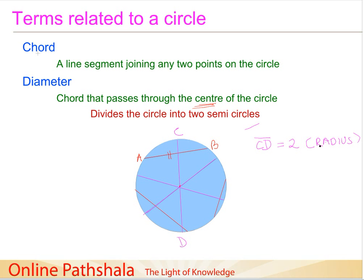This is an important thing to note: the distance from the center O to point C is the radius, and similarly from O to D is also the radius. So the diameter is nothing but twice the radius.